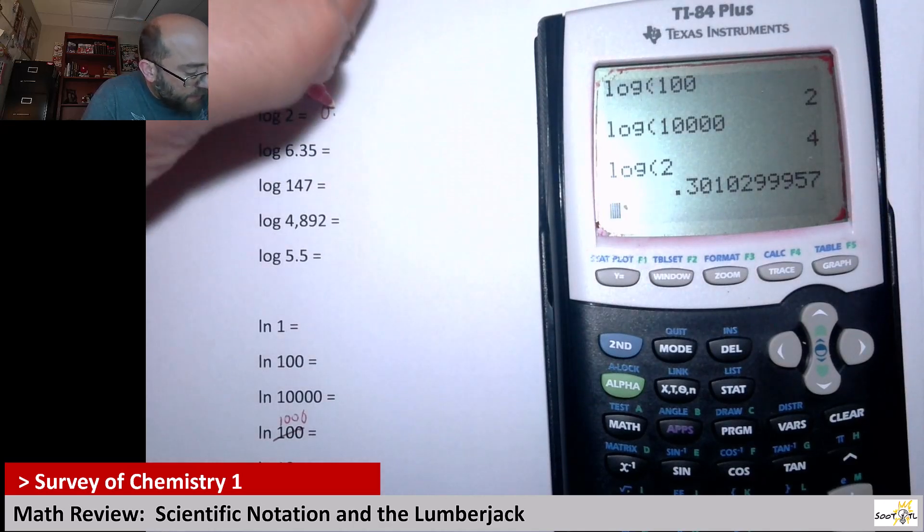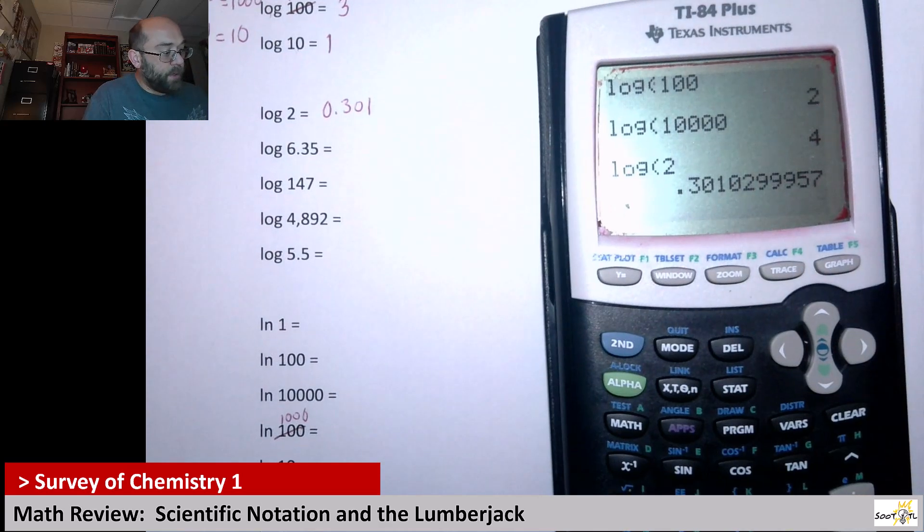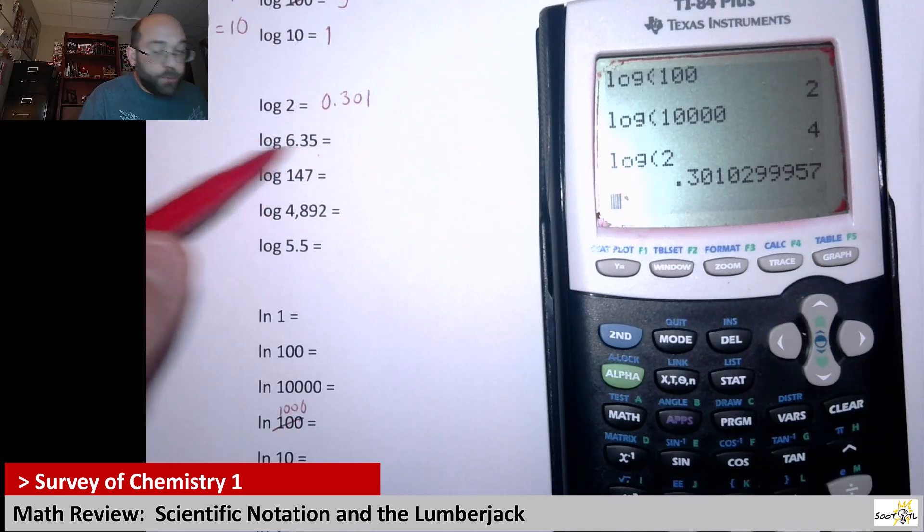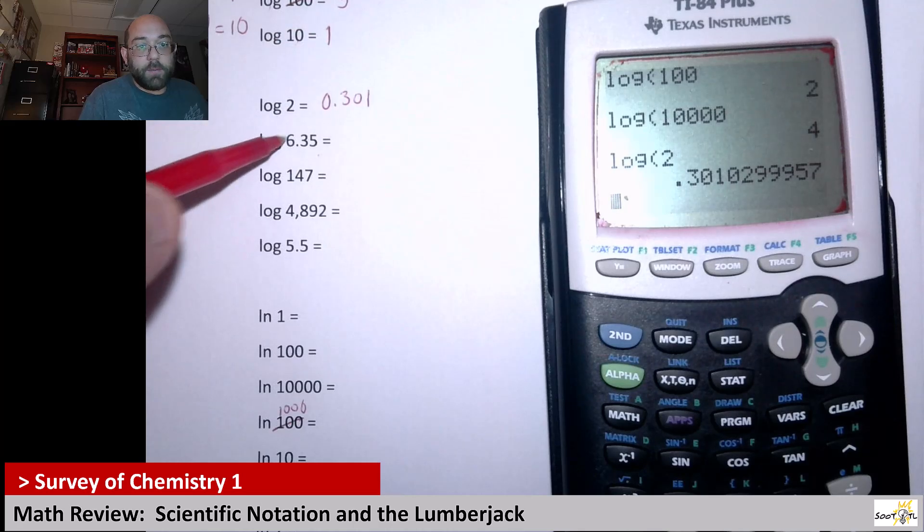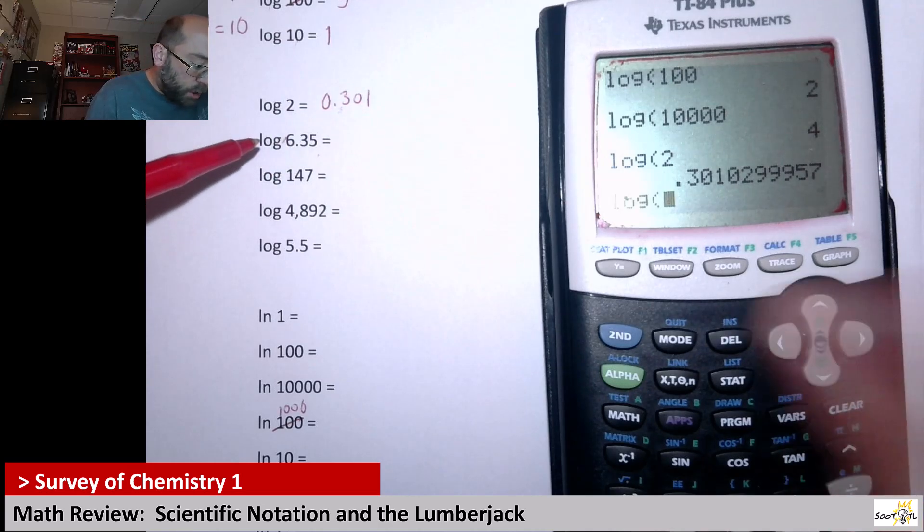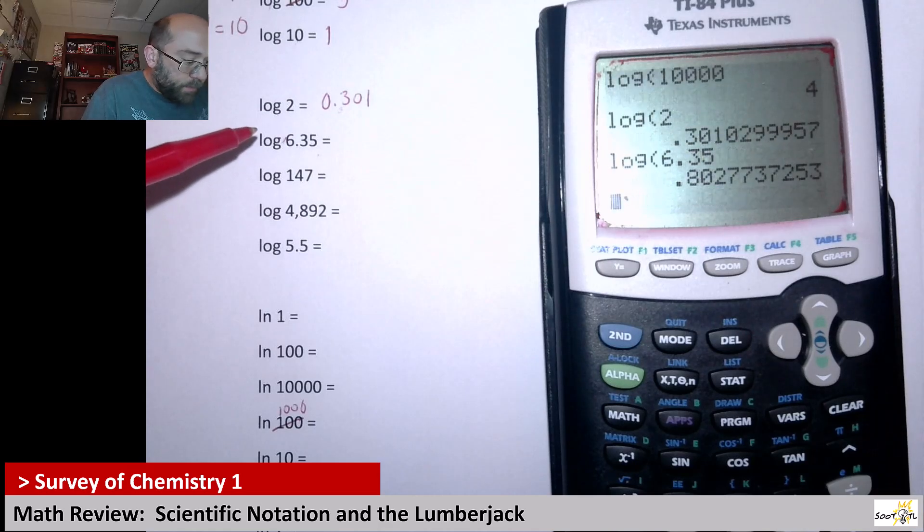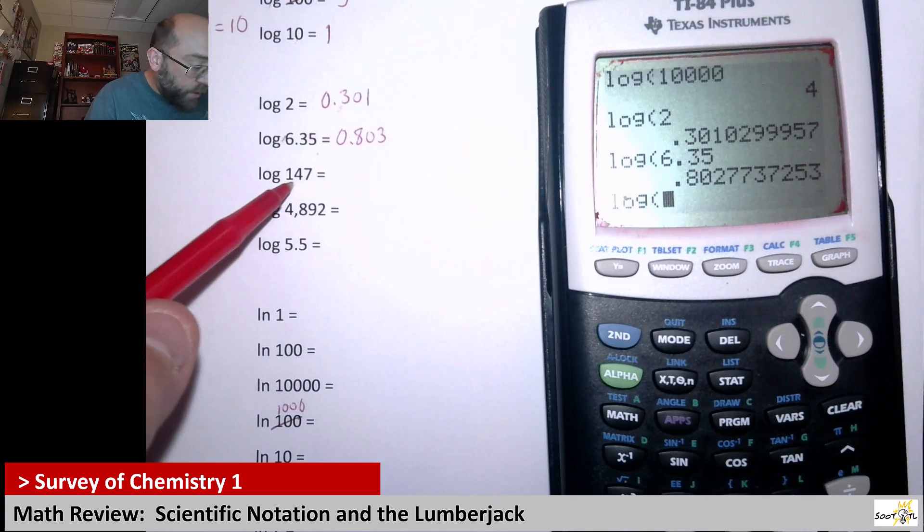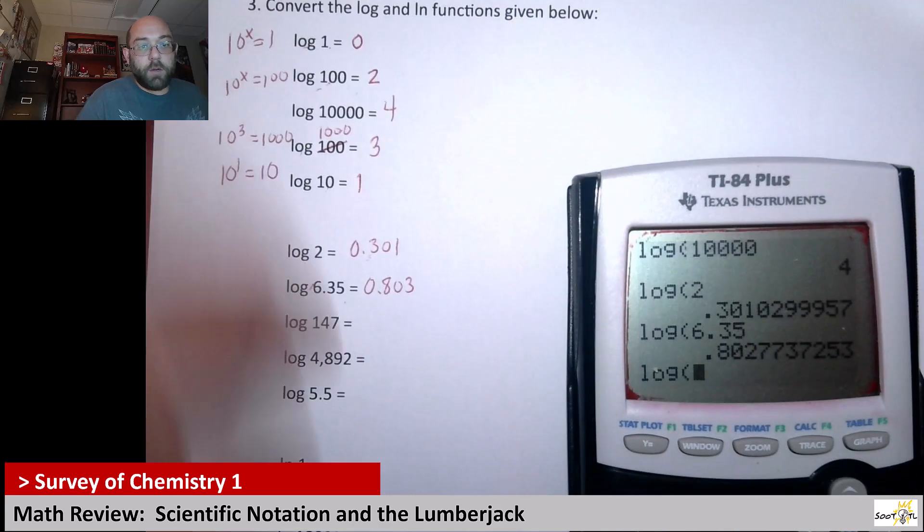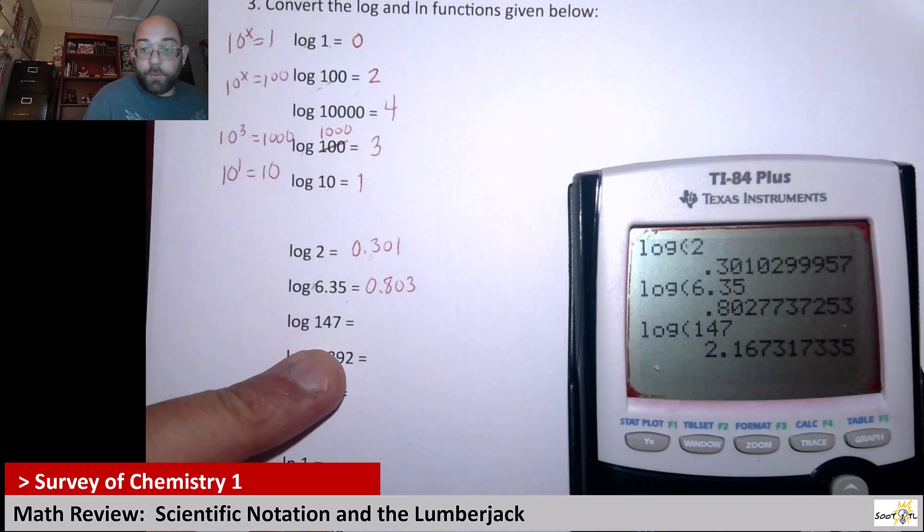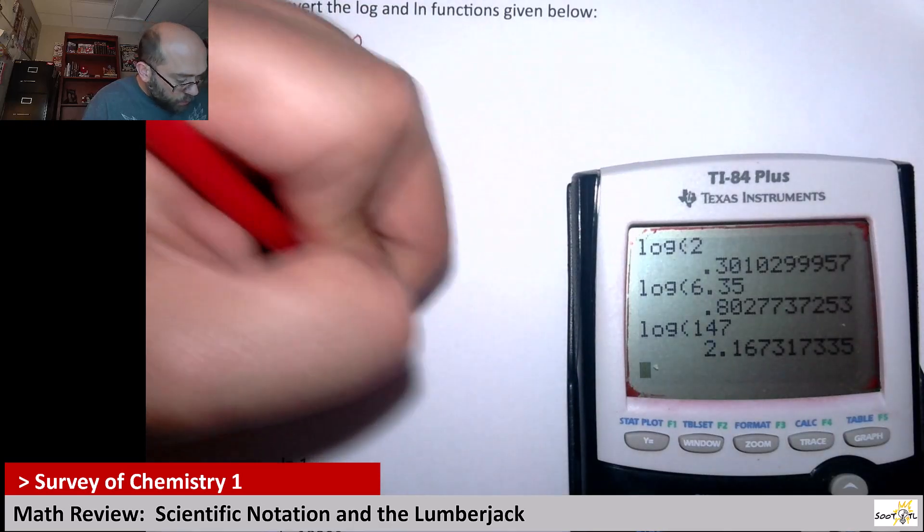I'm going to do three decimal places. So 0.301. And then here we've got log of 6.35. So this should also be greater than 1. But if you notice, log of 10 was equal to 1. So this number should also be somewhere between 0 and 1. But it should also be greater than 0.3. So let's see. What is log of 6.35? 0.803. I'm going to round that. Next up I get log of 147. So that's a little greater than 100. So remember log of 100 was 2. So log of 147 should be greater than 2. So let's see what it is. 2.167.